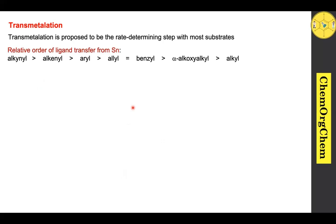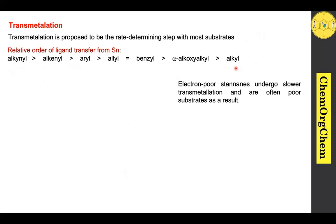Moving on to transmetalation — in this step, organostannanes transfer their R group to the palladium complex, facilitated by the palladium center, and tin-halide exchange takes place. Transmetalation is proposed to be the rate-determining step with most substrates. The relative order of ligand transfer from tin shows that alkenyl has a high transfer rate compared to alkyl, while alkyl has one of the lowest transfer rates. In general, electron-poor stannanes undergo slower transmetalation and are often classified as poor substrates for the Stille cross-coupling reaction.